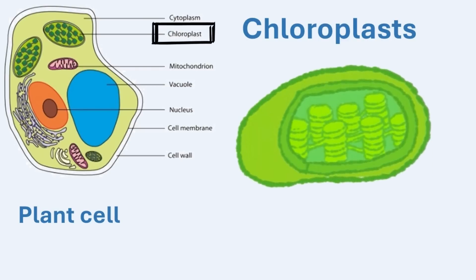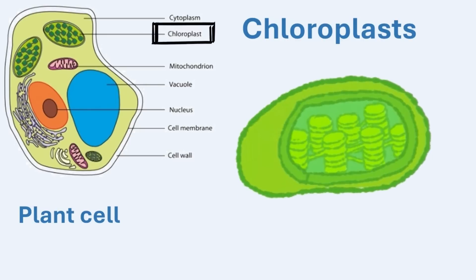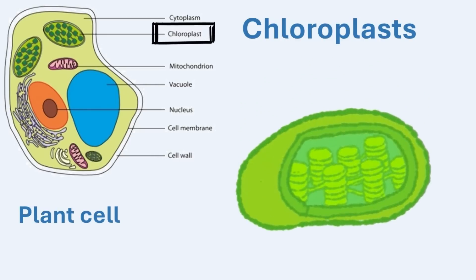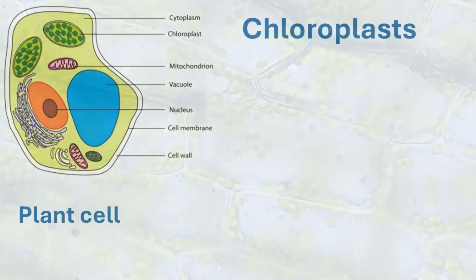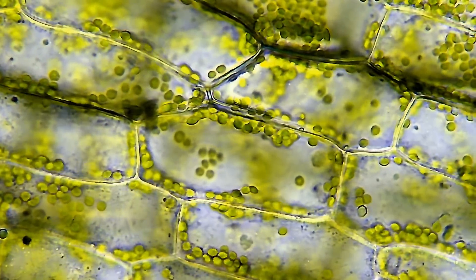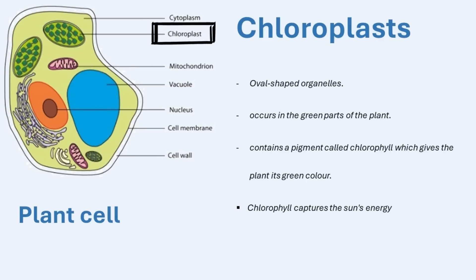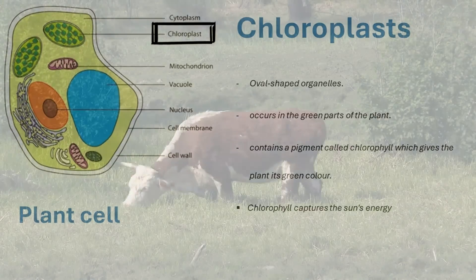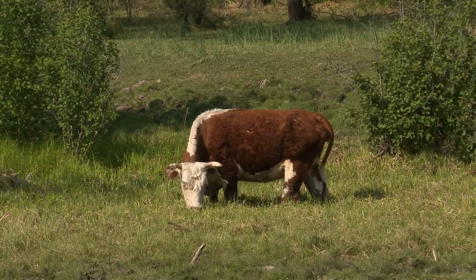Chloroplasts are oval-shaped organelles found in the cytoplasm of plant cells, particularly in the green parts of plants such as leaves and stems. These organelles contain chlorophyll, the green pigment responsible for the plant's color. Chlorophyll captures energy from sunlight, which is then used — along with carbon dioxide and water — to produce food in the form of glucose and starch. This essential process is called photosynthesis. Unlike plants, animals cannot photosynthesize because their cells lack chloroplasts; instead, animals must obtain energy by consuming food.